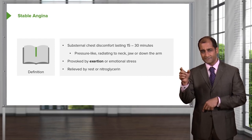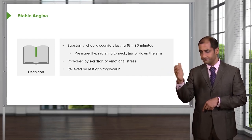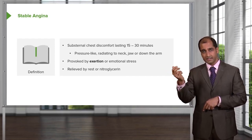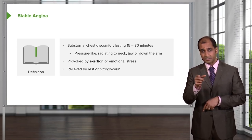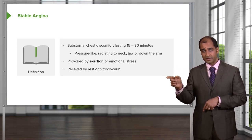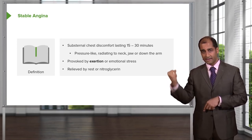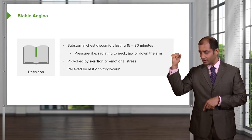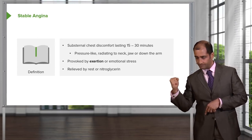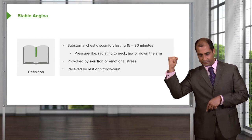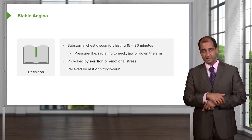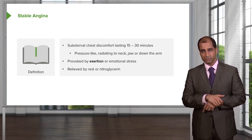The ST segment is isoelectric after your QRS complex — it's usually flat. When you induce a stress test in a patient who gives you a history of pain upon exertion, you take your hand and pull that bar — your ST isoelectric — down. It's called an ST strain or ST depression. Exertion, as simple as that.